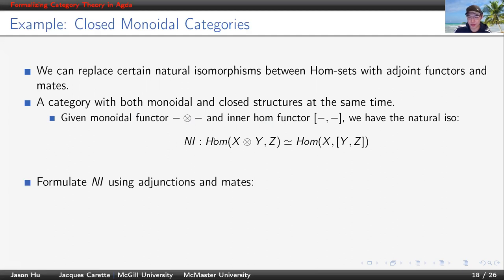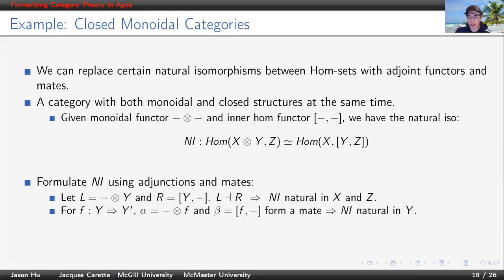Now we can split this natural isomorphism into two parts, the adjunction part and the mate part. In the adjunction part, we let the left adjoint functor like in this form and the right one in this form. By requiring L and R to form an adjunction, it's the same as saying Ni is natural in X and Z. Since this adjunction exists for all Y, if we have a morphism connecting different Ys, then we can obtain two induced natural transformations, alpha and beta, by instead of plugging Y, we plug in F. If we require alpha and beta to form a mate, it's the same as saying Ni is natural in Y.